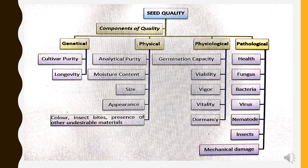Under genetical quality, there is cultivar purity and longevity. In case of physical quality, there is analytical purity, moisture content, seed size and appearance, seed color, insect bites, and presence of other undesirable materials. In case of physiological quality, there is germination capacity, viability, seed vigor, seed vitality and seed dormancy. In case of pathological quality, there is seed health, attack of fungus, bacteria, virus, nematodes, insects and mechanical damages.